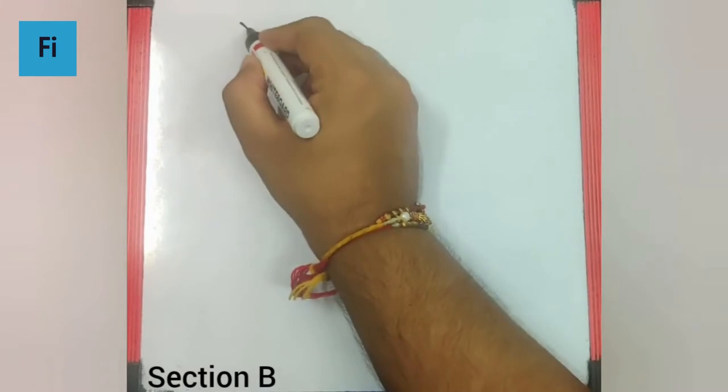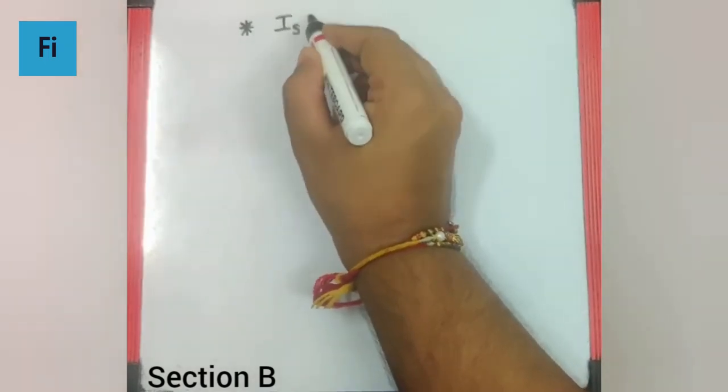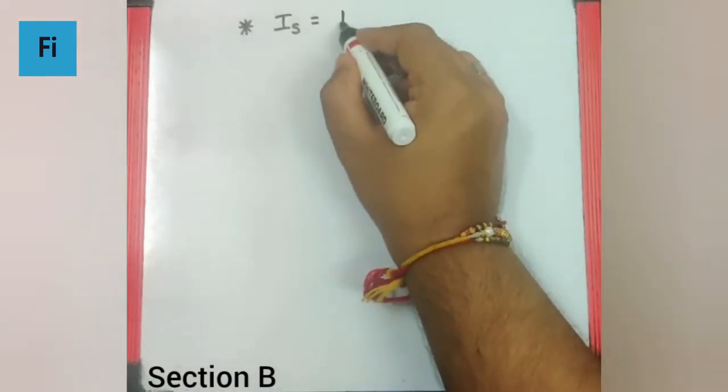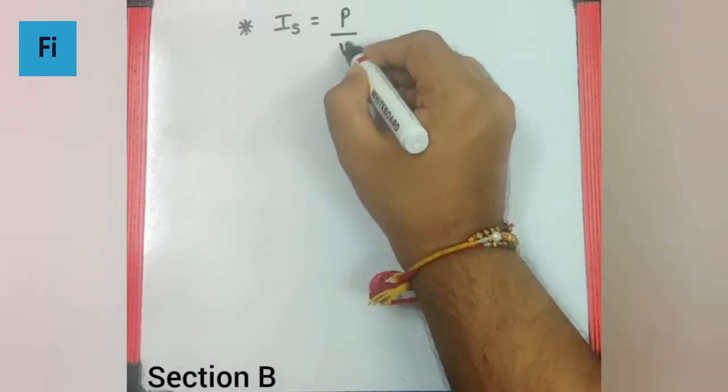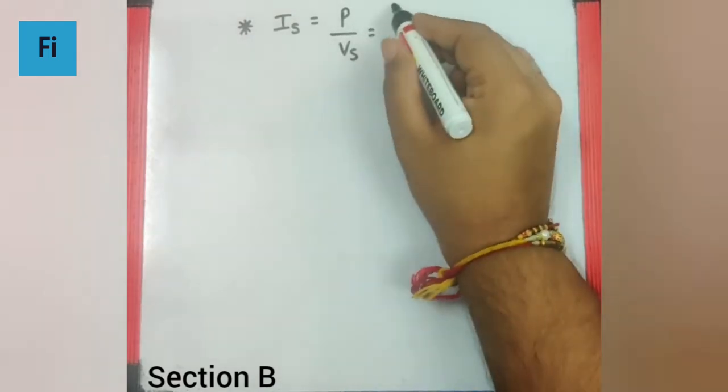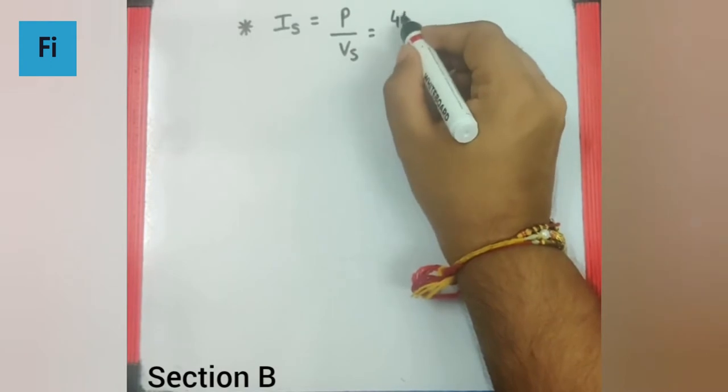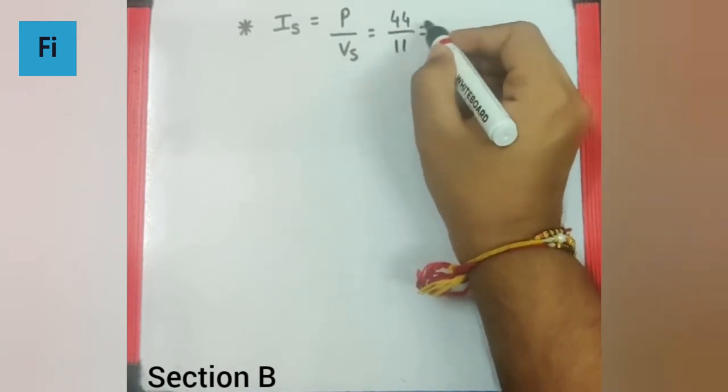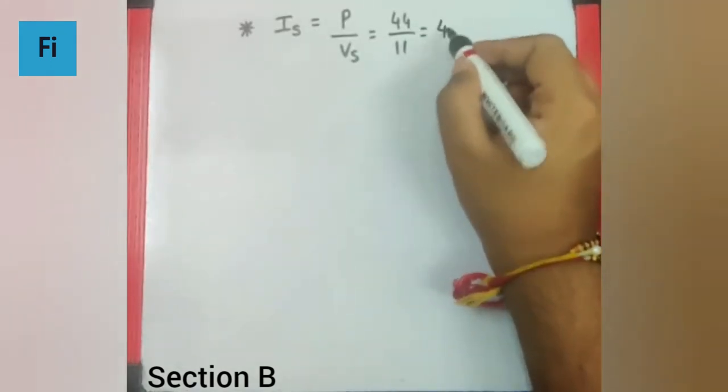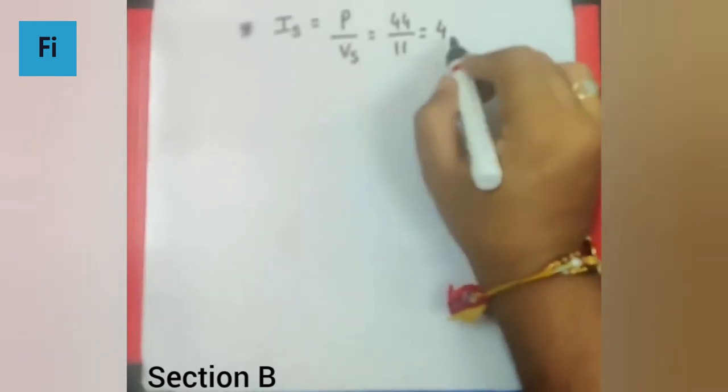So first of all I can say the current in the secondary circuit is the power upon the voltage. That means it is going to be 44 upon 11 which is nothing but 4 ampere.